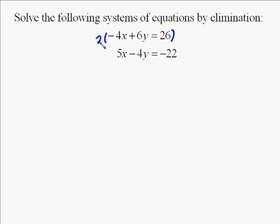We want the least common multiple of 12, so we need to multiply the top one by 2, and we're going to multiply it by positive 2. Then the bottom one, we're going to multiply by 3, and also by positive 3 because the 6 is positive and the 4 is negative.